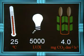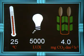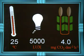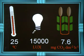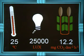The temperature in the cabinet is kept at 25 degrees Celsius. With four fluorescent tubes switched on, the light intensity is 5,000 lux and the CO2 uptake is 4 milligrams per hour. At 15,000 lux the figure is 7.6, and at 25,000 lux the CO2 uptake is 12.2.